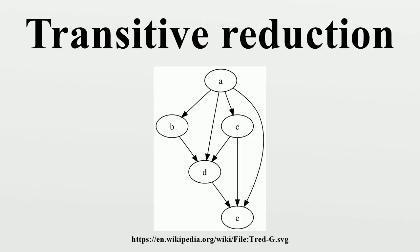The following image displays drawings of graphs corresponding to a non-transitive binary relation and its transitive reduction. The transitive reduction of a finite directed acyclic graph G is unique, and consists of the edges of G that form the only path between their endpoints. In particular, it is always a subgraph of the given graph. For this reason, the transitive reduction coincides with the minimum equivalent graph in this case.